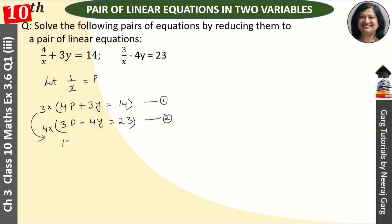After multiplying, the first equation becomes 12p + 9y = 42, and the second equation becomes 12p - 16y = 92.